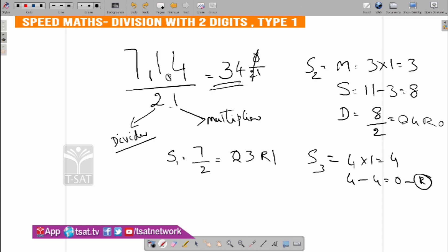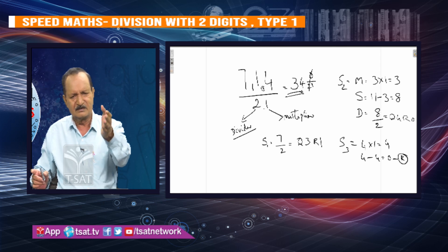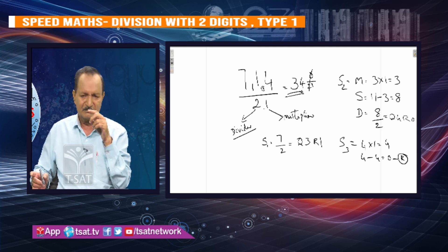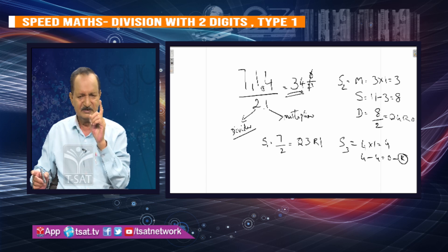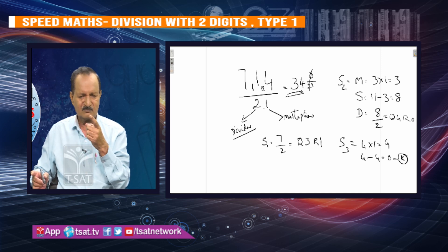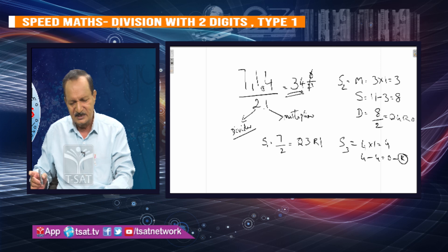Let's do one more revision. 7 by 2: quotient 3, remainder 1. The remainder 1 brings down to give 11 — that's the next step number, the MSD. Multiplication: 3 into 1 is 3. Subtraction: 11 minus 3 is 8. Division: 8 by 2, quotient 4, remainder 0. The last digit is always the remainder.